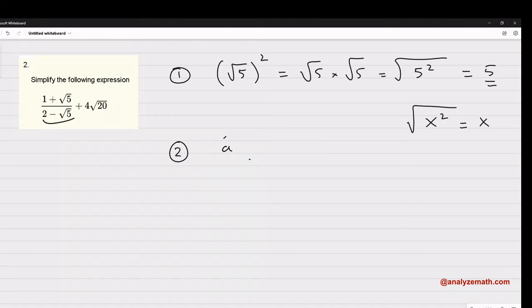The second idea is the following. If I multiply the difference and the sum of two numbers a and b, I get a multiplied by a, a², a multiplied by b, and then here ab with a minus, so that gives me 0. And then b by b, and there is a minus here, minus b².